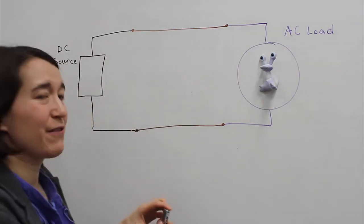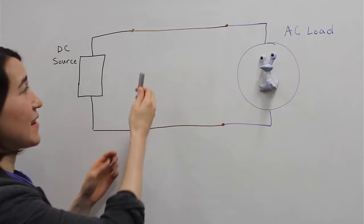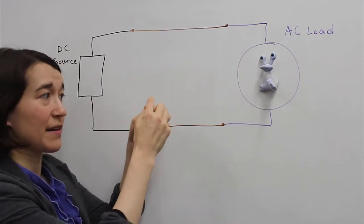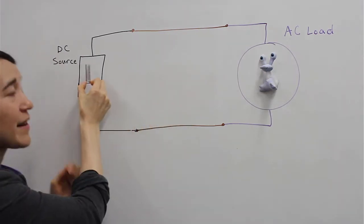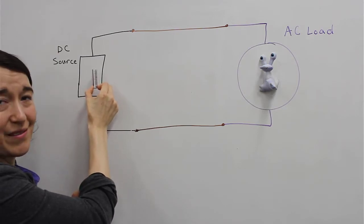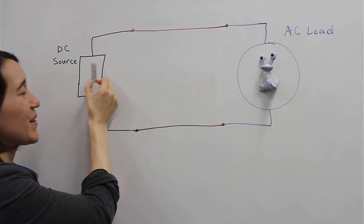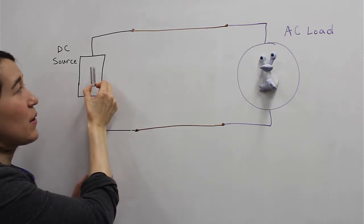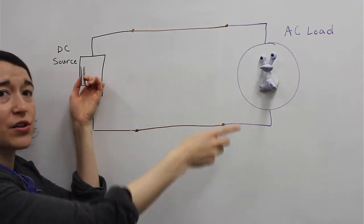So if we want to take a DC load, here's a battery, positive and negative, and it's here on our DC source side just to show the polarity. So here's our power source, and we want to deliver the power from this battery to Valerie.